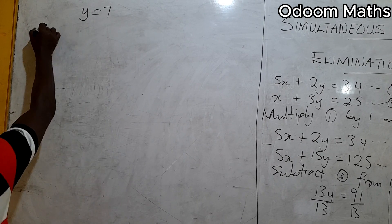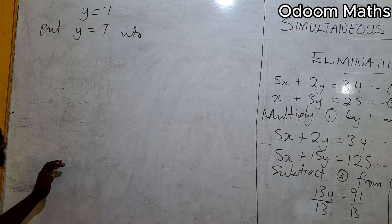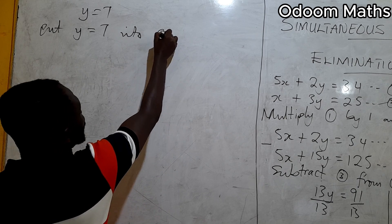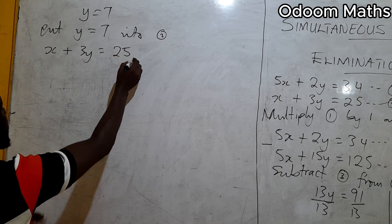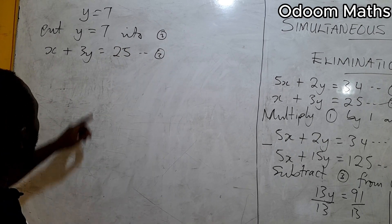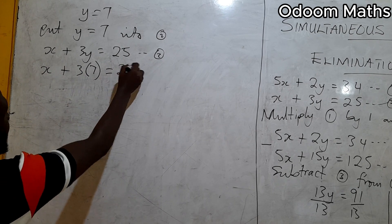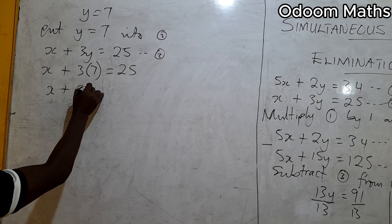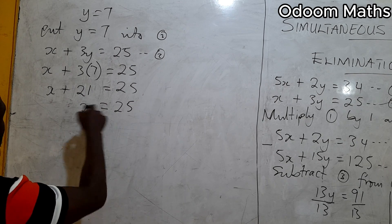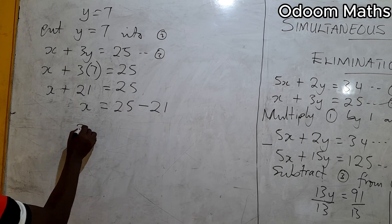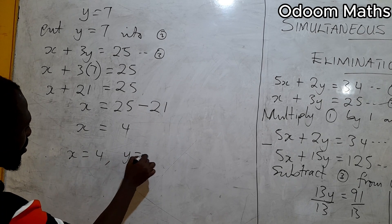Now we substitute y equals 7 into equation 2: x plus 3y equals 25. Replacing y with 7: x plus 3 times 7 equals 25, so x plus 21 equals 25, giving x equals 25 minus 21, which is 4. Therefore x equals 4 and y equals 7.